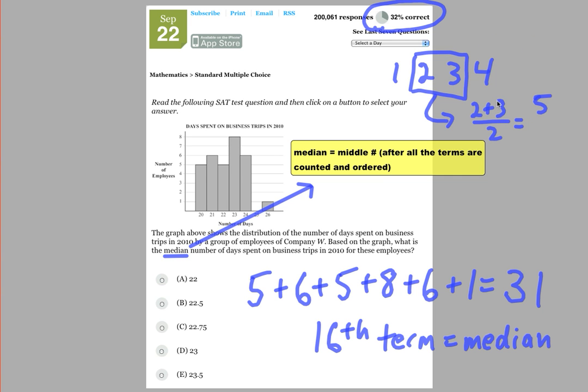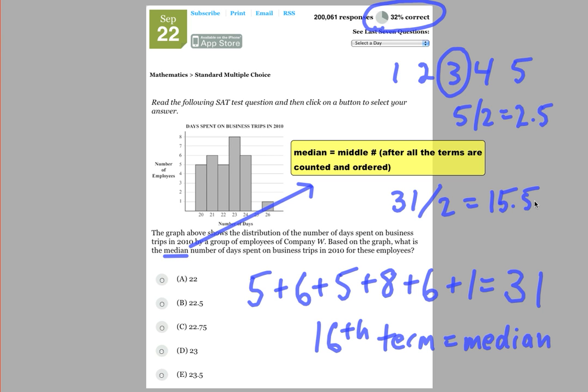But when there's an odd number of numbers, there is a true middle. For example, if I had the list one, two, three, four, five, then three becomes the middle number and the median. Now, what you'll notice too is if I divide five by two to try to see the halfway point, I get 2.5, and the next highest integer happens to be my median. So that's what I would do here for 31 as well. I would divide 31 by 2, and I realize that equals 15.5. So the next highest number is the 16th term, which is the median.